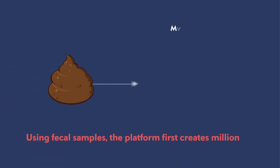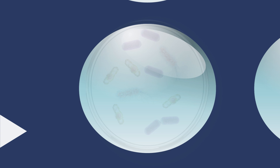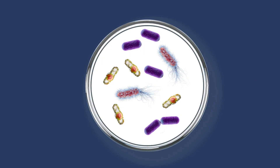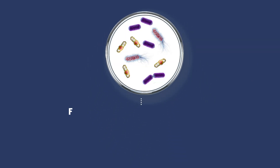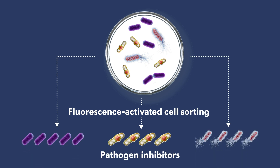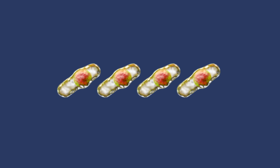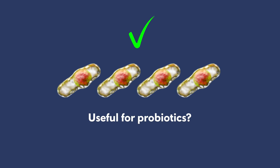Using fecal samples, the platform first creates millions of microdroplets of a liquid that microbes can thrive in. Each microdroplet hosts a complex community of microbes. Using fluorescence-activated cell sorting, the microbes in these droplets can be categorized and then identified through genetic sequencing techniques. In this way, the platform can identify and isolate beneficial species for use in new probiotic formulations.